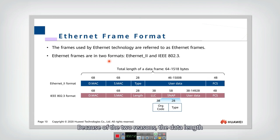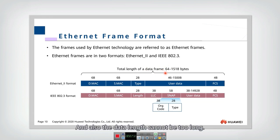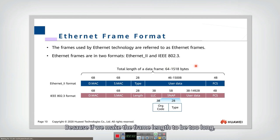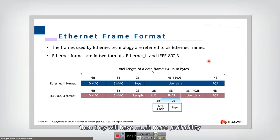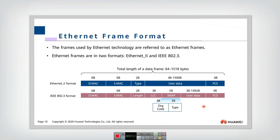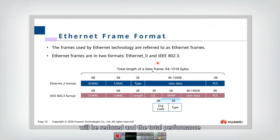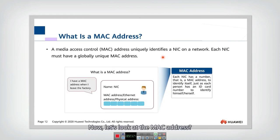Because of these two reasons, the Ethernet frame length cannot be too short. Similarly, the frame length cannot be too long, because if the frame is too long there is a much higher probability of colliding with other nodes, which reduces the successful transmission rate and degrades overall network performance.